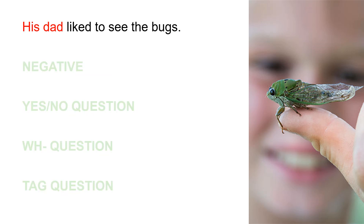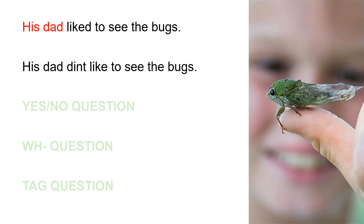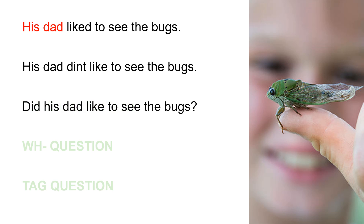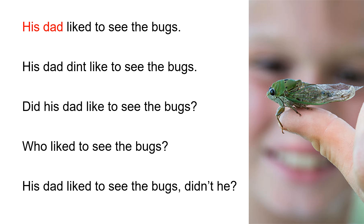His dad liked to see the bugs. Negative: His dad didn't like to see the bugs. Yes/no question: Did his dad like to see the bugs? W.H. question: Who liked to see the bugs? Tag question: His dad liked to see the bugs, didn't he?